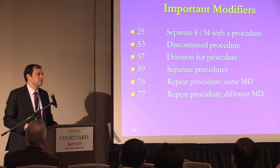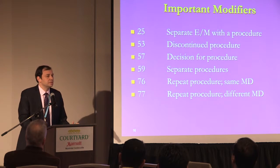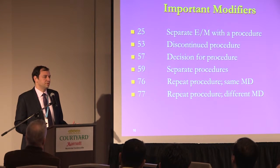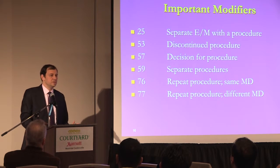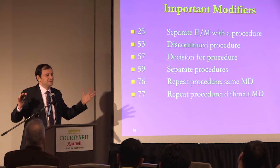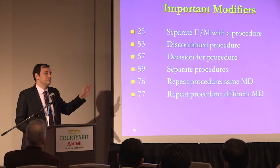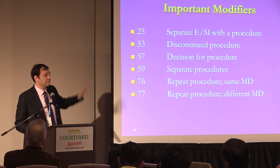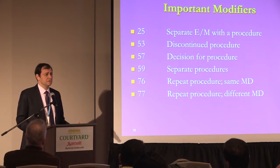Modifier 53 is for a discontinued procedure. If you start a procedure but can't complete it — maybe you started inserting the scope, the patient was combative, you couldn't sedate them, and you only got past the cords — you can still bill that procedure with modifier 53, and Medicare typically pays about half.